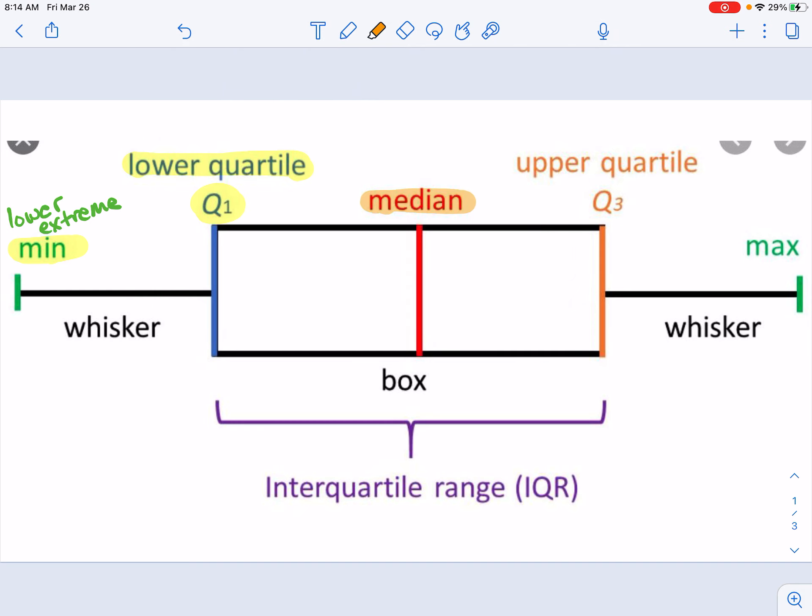Then we have the median. The median is quartile 2, so that's the middle of our data. And then we have quartile 3, which is also the upper quartile. And then we have our maximum value, or sometimes called the upper extreme. So these are the five data points that are shown within our box plot.